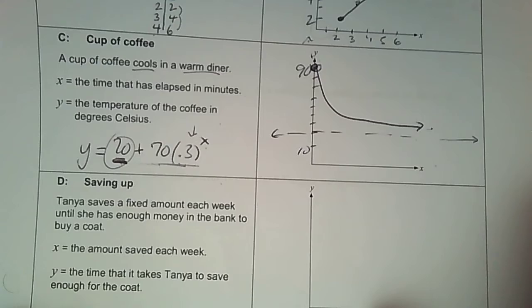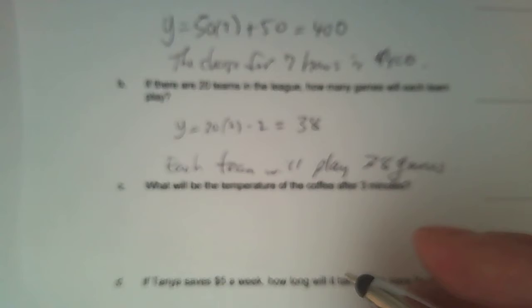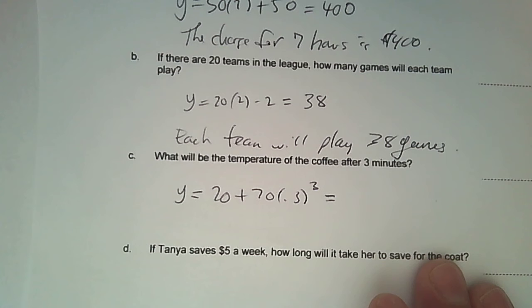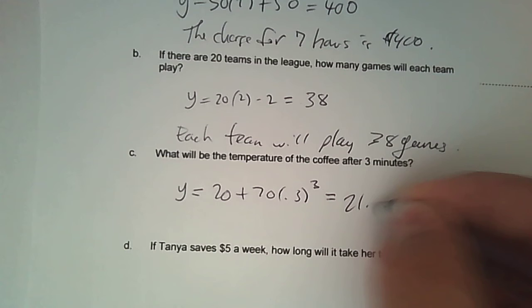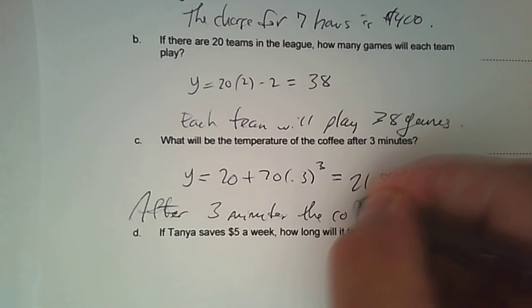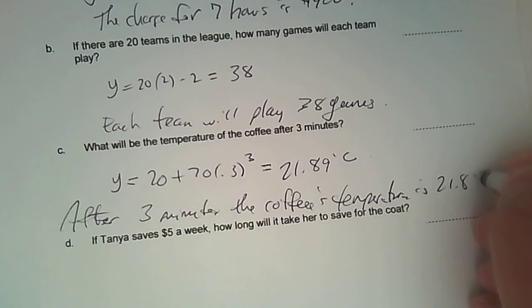This here, we don't have negative values there, but there's the coffee cooling over time. And then let's answer the question that's being asked. So what will the temperature of the coffee be after three minutes? So I'm going to plug in. And then this is really, I think, a calculator question, where you then would plug it in your calculator. If you did plug that into your calculator, according to my answer key, it's about 21.89. So almost 22 degrees Celsius. So after three minutes, the coffee's temperature is 21.89 degrees Celsius.